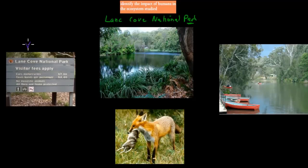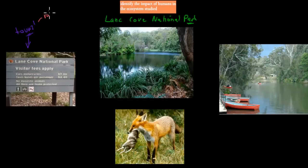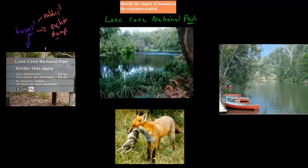Lots of visitors — tourists and other visitors — visit Lane Cove National Park on a daily basis. And this obviously could lead to rubbish being left, or native species being hurt in some way. So tourists could have some impact on the environment.